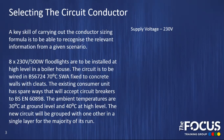First of all, we have our supply voltage, which is 230 volts, single phase. Our load will be 8 times 500 watt floodlights, so that will give us 4000 watts or 4 kilowatts for our load. The supply voltage and the power rating will be key to working out an accurate design current. Then we have the equipment, which is going to be commercial lighting. This will be key in determining what type of protective device to use.